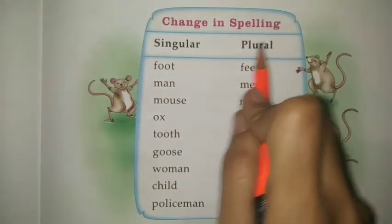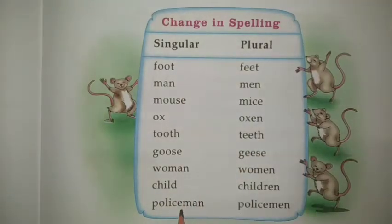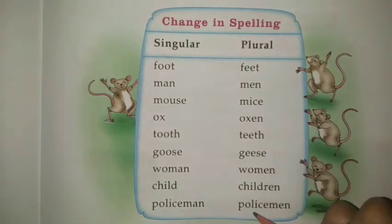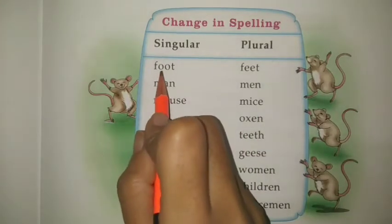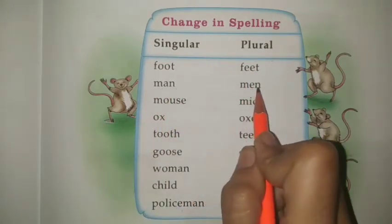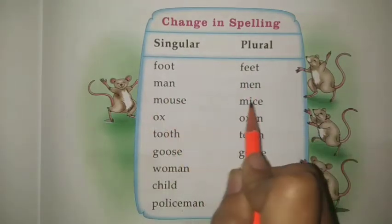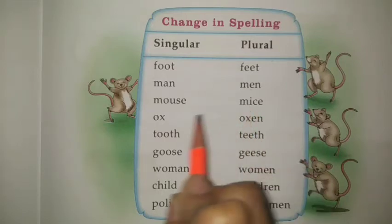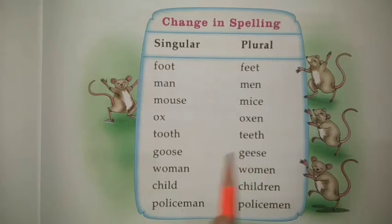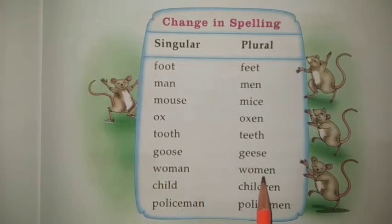Change in spelling — irregular plurals. यहाँ पे singular noun के spelling में change हो जाता है: foot → feet, man → men, mouse → mice, ox → oxen, tooth → teeth, goose → geese, woman → women, child → children, policeman → policemen.